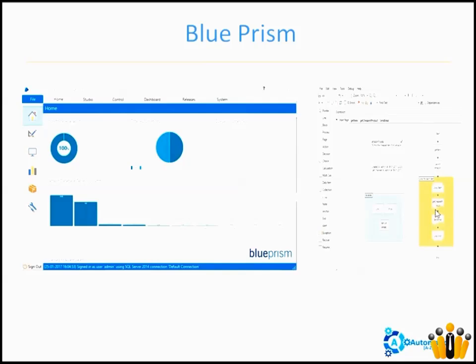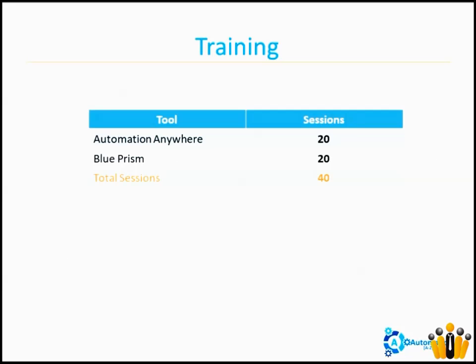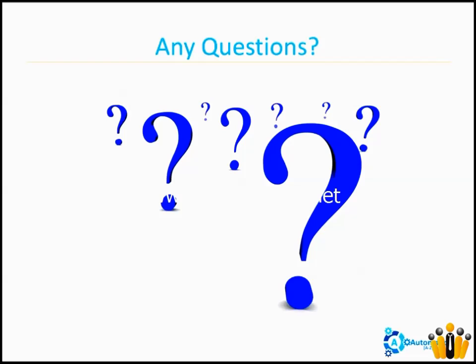When it comes to the training, you will have 20 sessions on Automation Anywhere and 20 sessions on Blue Prism, totaling 40 sessions. The first 20 sessions will be on Blue Prism, and the next 20 sessions will be on Automation Anywhere.